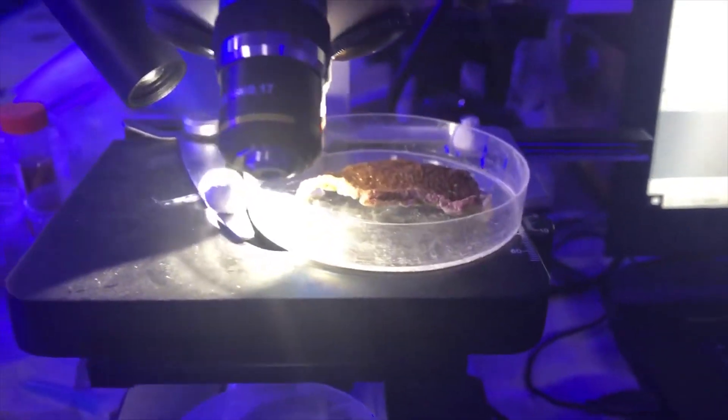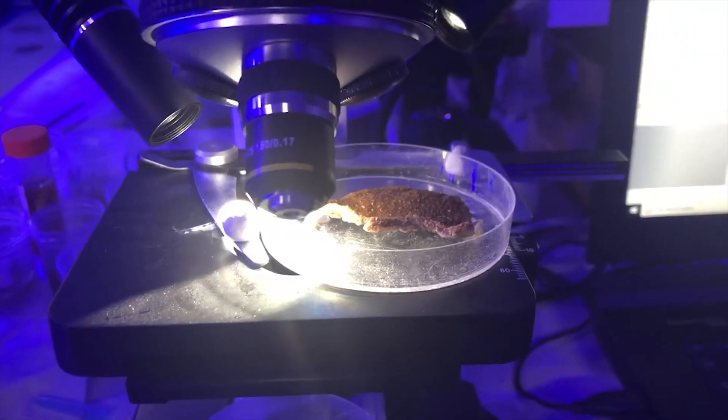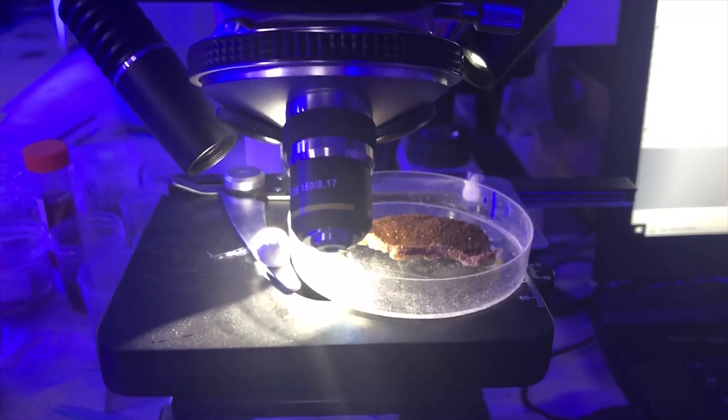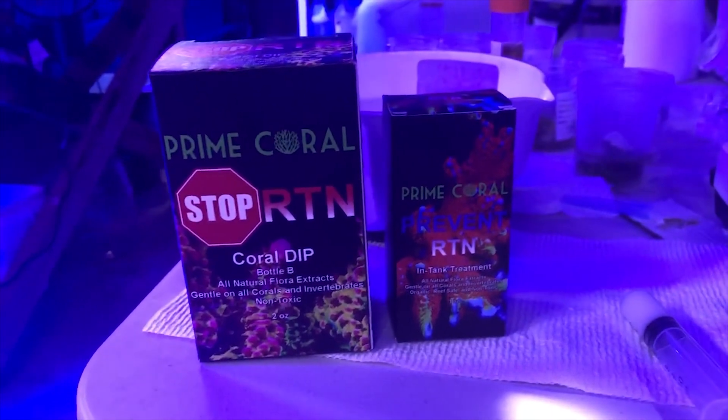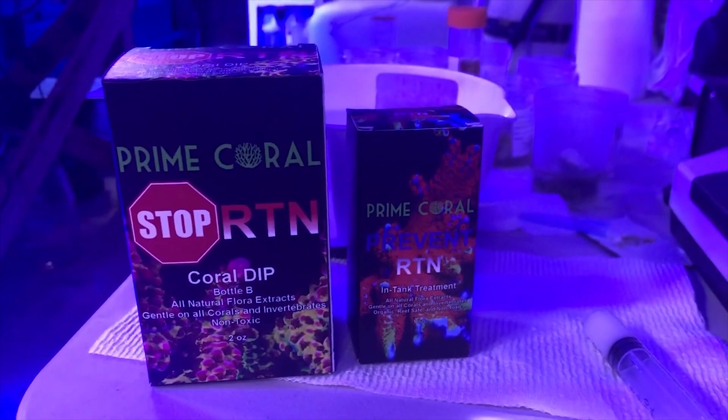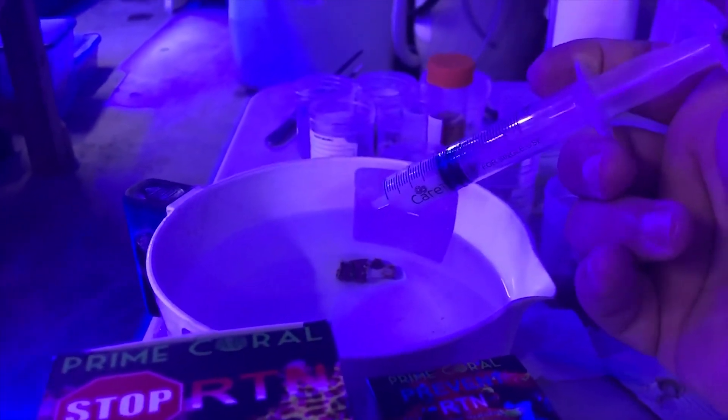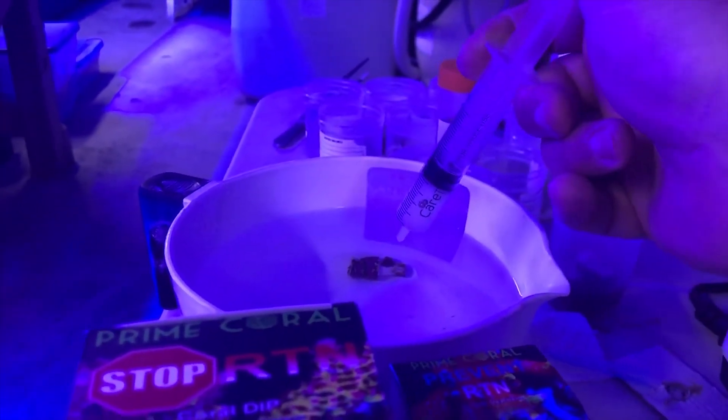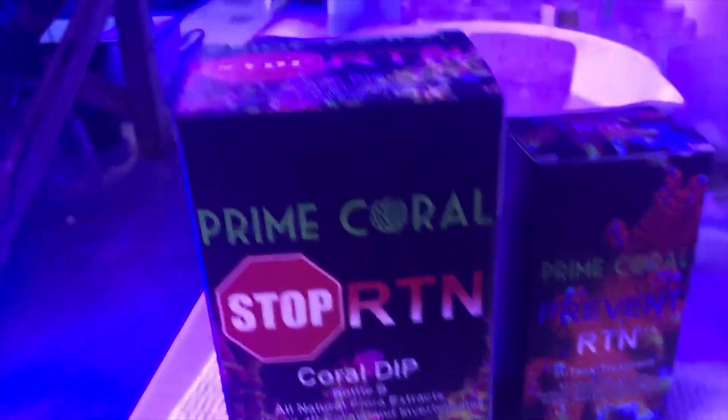Now that we've made the diagnosis of RTN on our coral, and we know the cause is phylaster lucinda and phylaster vorax, we know the only treatment in the world that works is Prime Coral Stop RTN coral dip, and Prime Coral Prevent RTN in-tank treatment. So what I do is I'll take a quarter of a gallon of tank water, which is 1,000 mils, and I'm going to add 4 milliliters of Prime Coral dip. That's the Prime Coral Stop RTN coral dip.